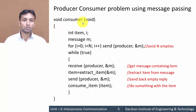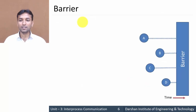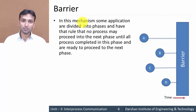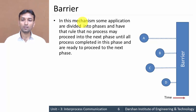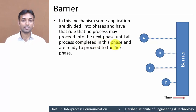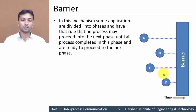Next is the barrier. What actually is a barrier? In this mechanism, all the applications are divided into small parts, and there is one rule: no process can proceed to the next phase until all processes complete their execution in the first phase and are ready to proceed. Here we have divided our process into four subparts: A, B, C, and D, with one barrier between phases.